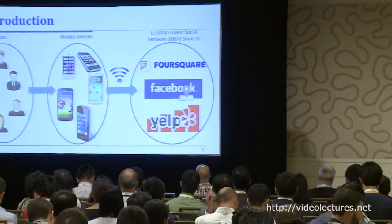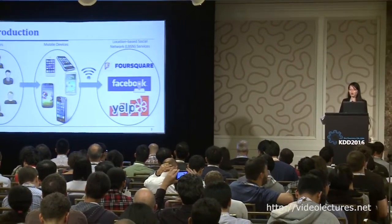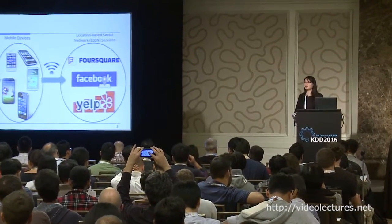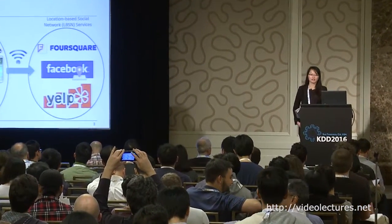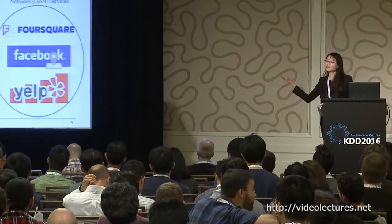Nowadays, with the development of mobile devices, a variety of location-based social network services have been developed, such as Foursquare, Facebook, and Yelp, and so on. People can access these services with Wi-Fi. Within these location-based social network services, people can interact with each other, such as building social connections and sharing information.